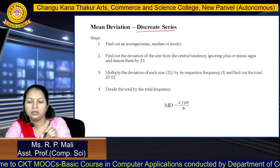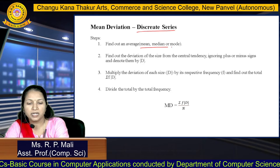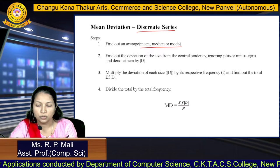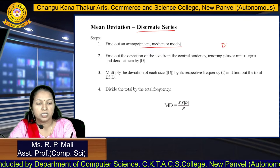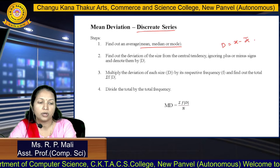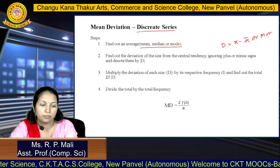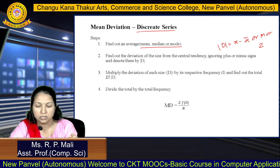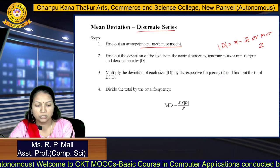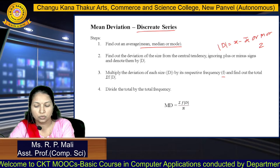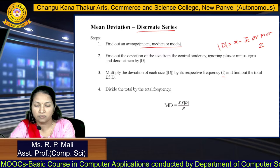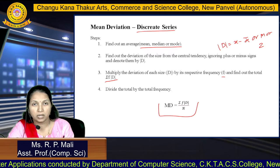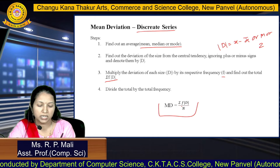Now we are going to see mean deviation for the discrete series. Same way, we find either the mean, median, or mode. Then find the deviation: |D| = x minus x̄ (or subtract by median or mode), ignoring signs. After finding the deviation, multiply it by the frequency f to get the f×|D| column. Find the summation of that column, then apply the formula: MD = Σf|D| / N.